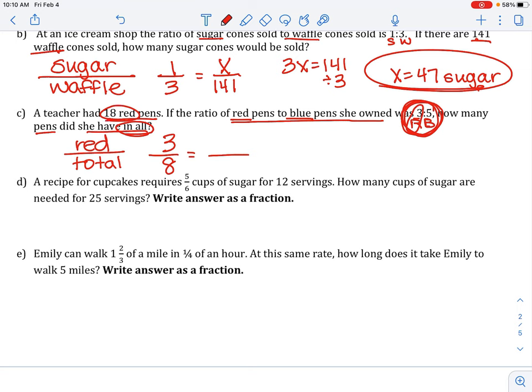Now, go back and use this final number here. A teacher had 18 red pens, so we want to know the total. 3 over 8 equals 18 over x. Let's cross-multiply. 3x equals 144. Take 144 divided by 3, and you get x equals 48 total pens.